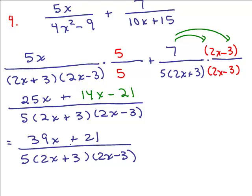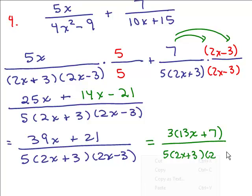Now at this point you want to see if it's possible to cancel any further. So what I'm going to do is factor the numerator if I can to see if anything will cancel. Out of the numerator, 39x plus 21, I can factor out a 3 and that would give you 13x plus 7, but none of these factors would cancel with anything in the denominator, so I could leave the answer like that or I could leave my answer in this form.